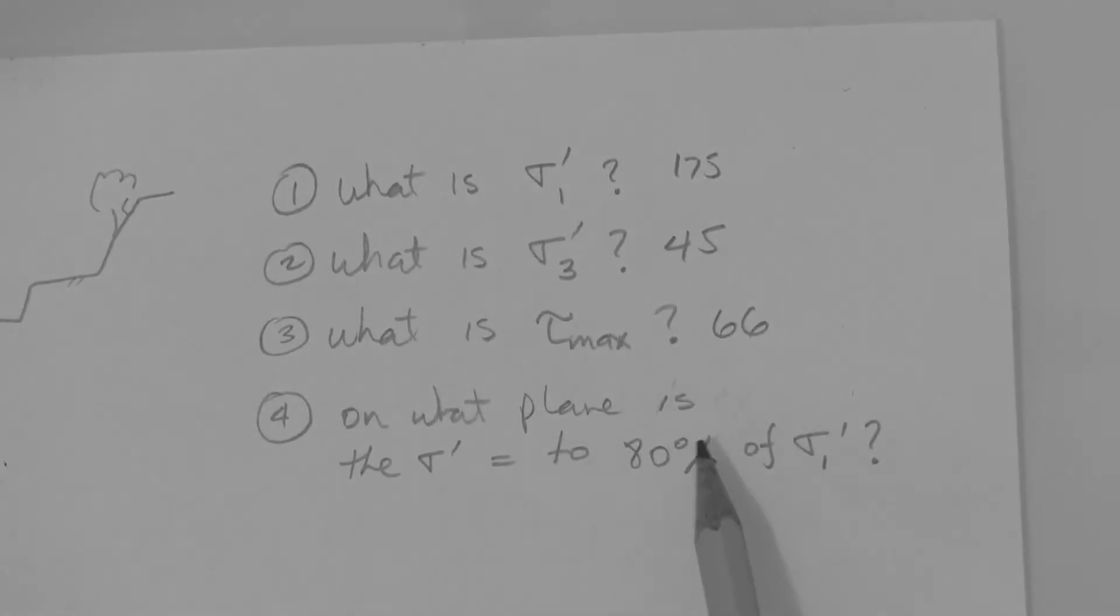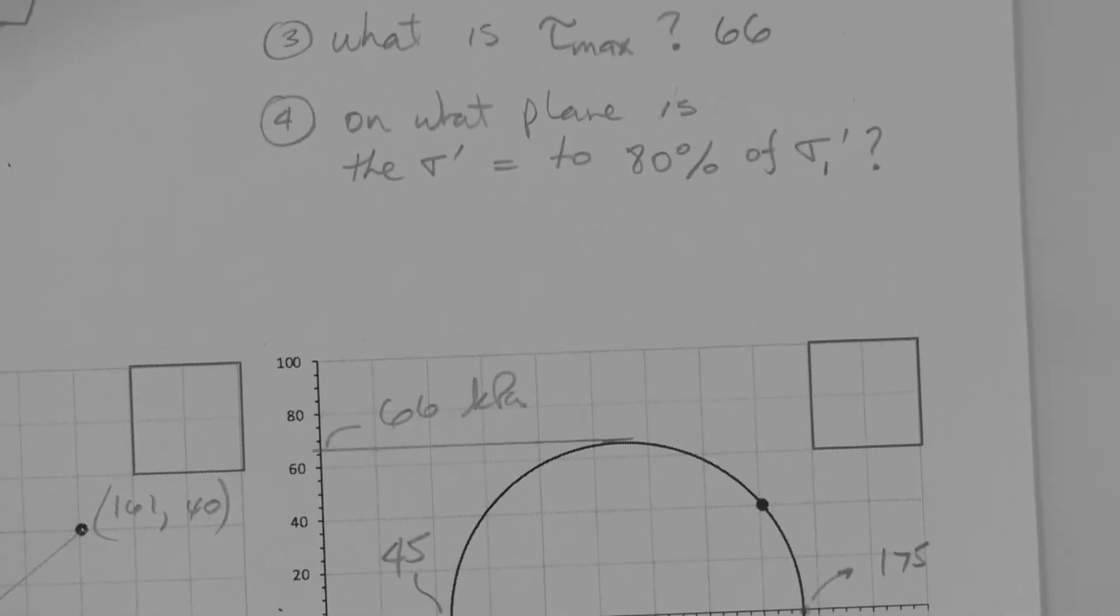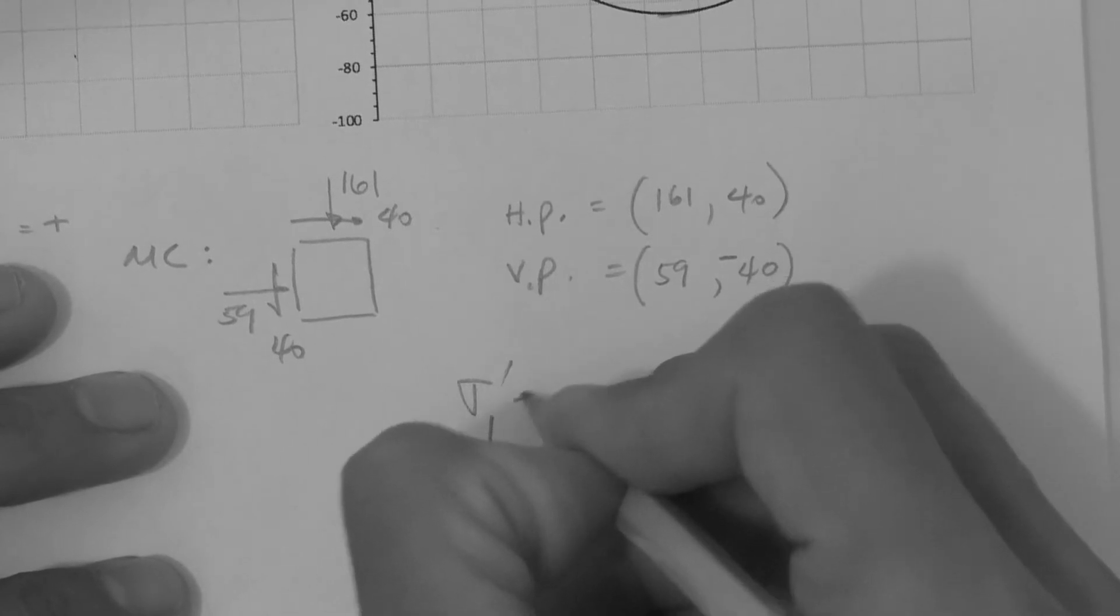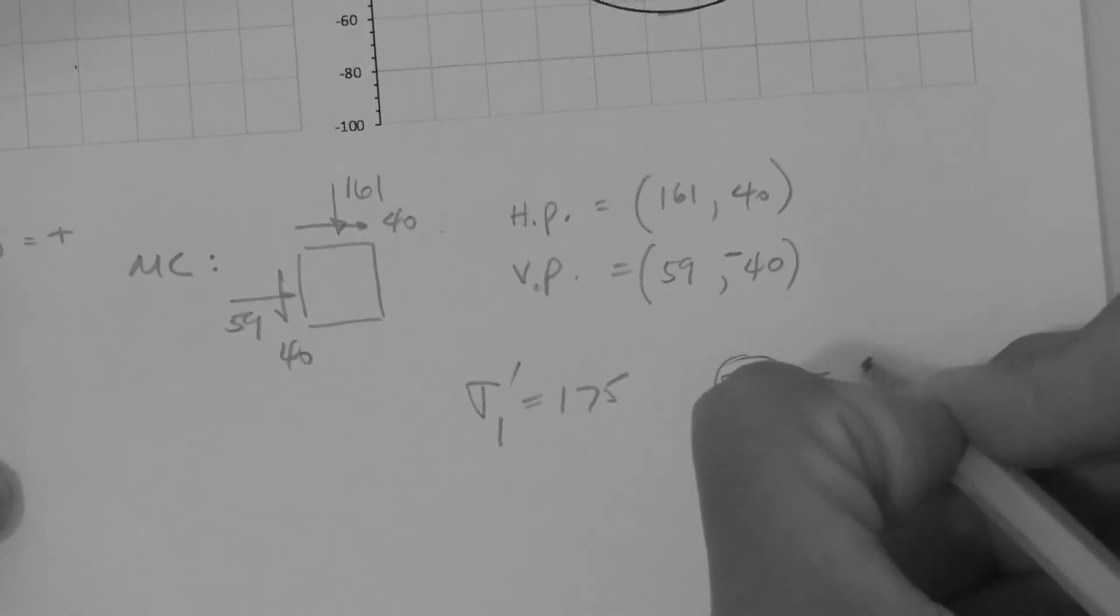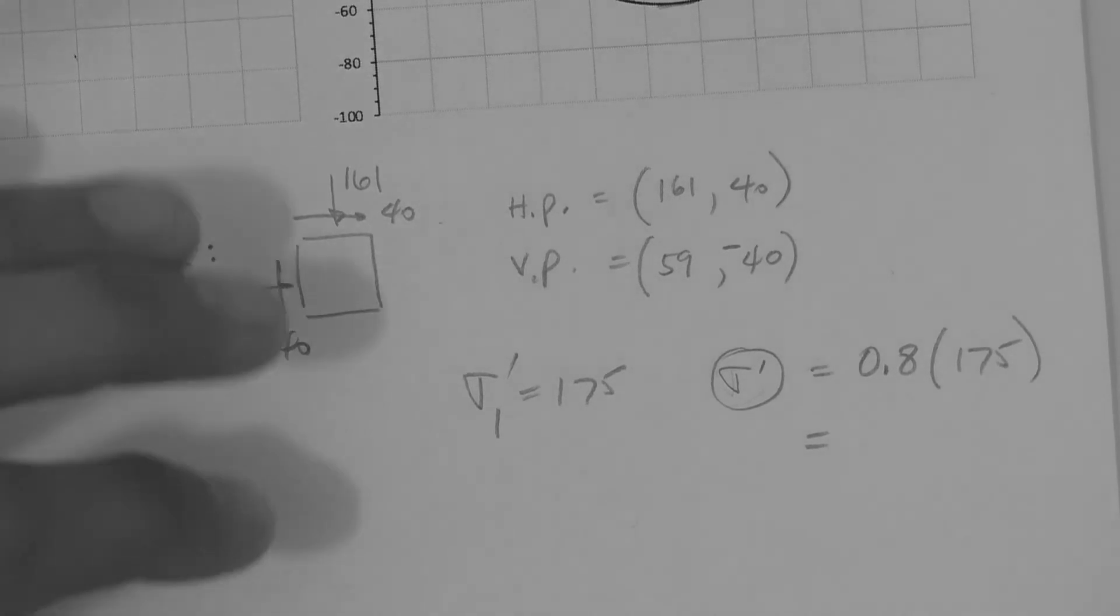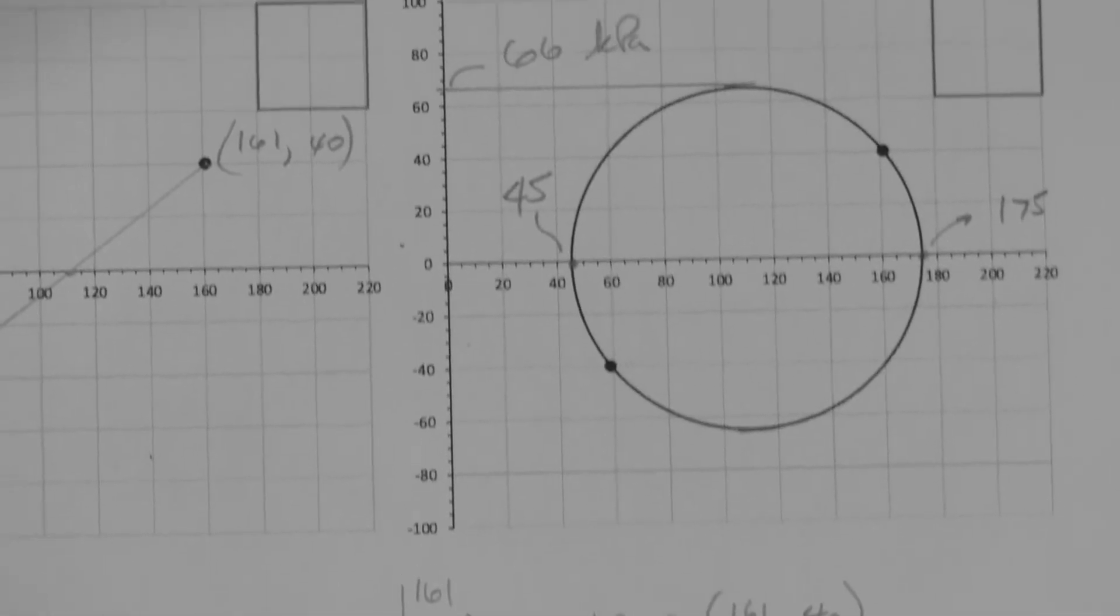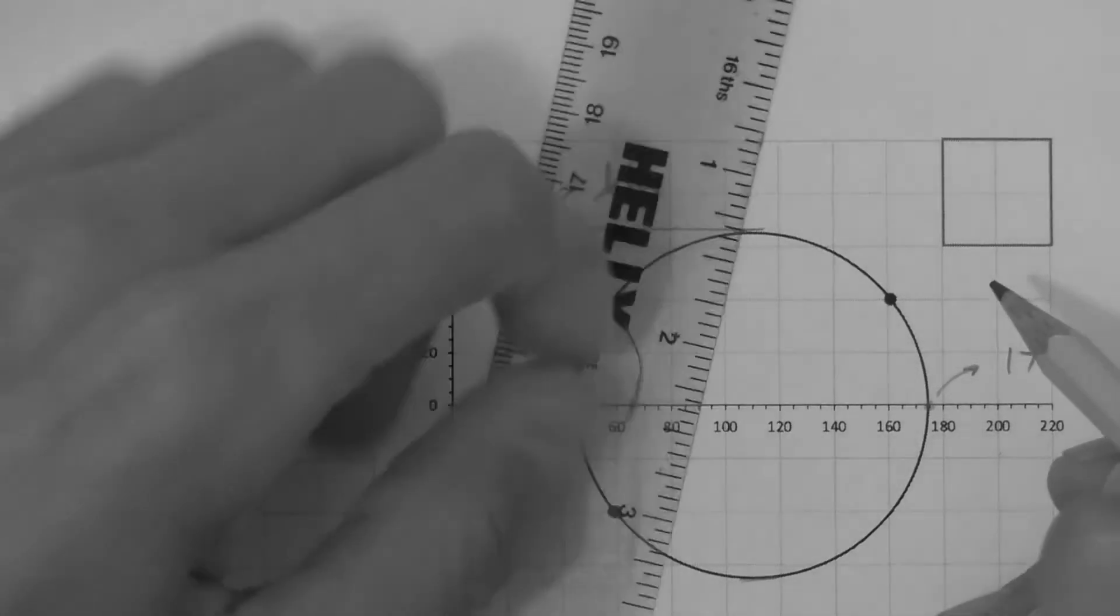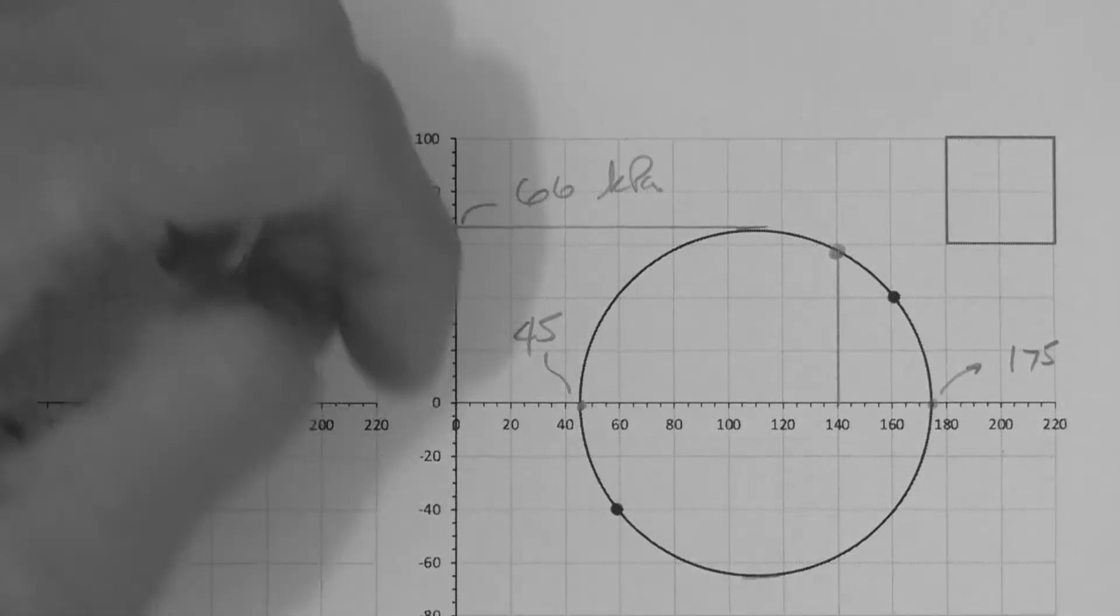Number four. On what plane is the effective stress equal to 80% of the major principal effective stress? To solve that problem, we need to first find what's 80% of the major principal effective stress. So the major principal effective stress is 175. We found that out before. And this effective stress that we want to find is 80%, 0.8, of this, 175. This is 140 kPa. So now we go to the Mohr circle and find the point on the Mohr circle that has a coordinate, x-coordinate, of 140. So here's 140.